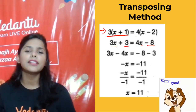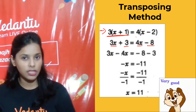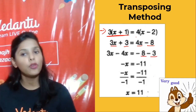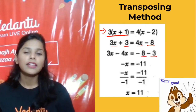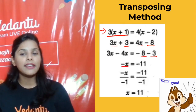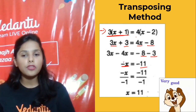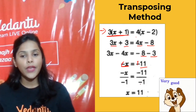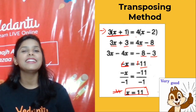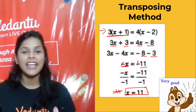Now taking variables to one side: 3x − 4x = −8 − 3. So −x = −11, which gives x = 11. I hope that is clear to everybody! If you've understood this, hit the like button quickly!